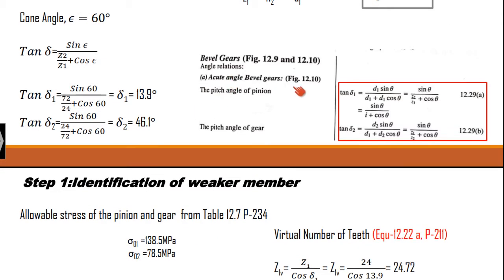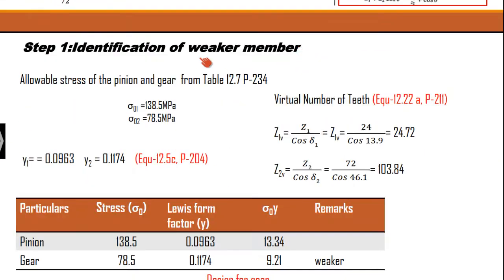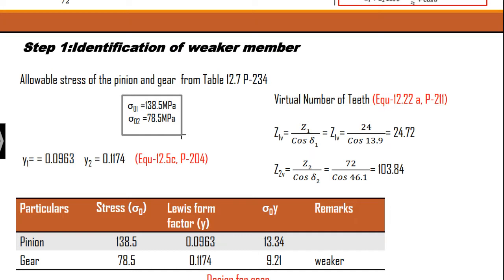There are two other sets of equations: one for the right angle bevel gear and another for the obtuse angle bevel gear, based upon the inclination of the shaft. If it is 90 degrees, you go for the right angle bevel gear. If it is more than 90 degrees, you opt for the obtuse angle type. Moving forward with the calculation of the weaker member, we have the material provided, so we can note the allowable stress values: 138.5 and 78.5 MPa.